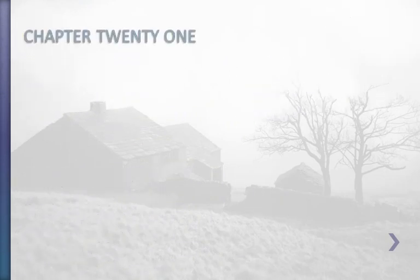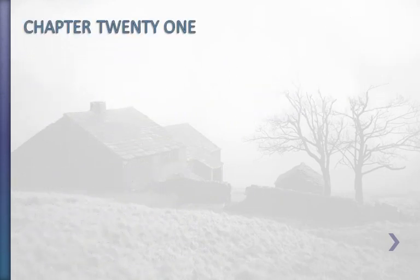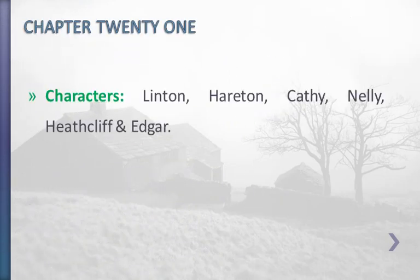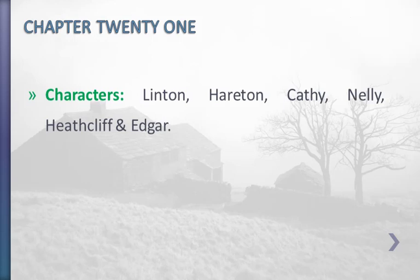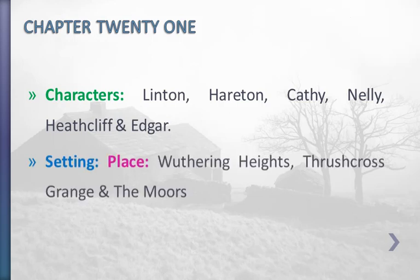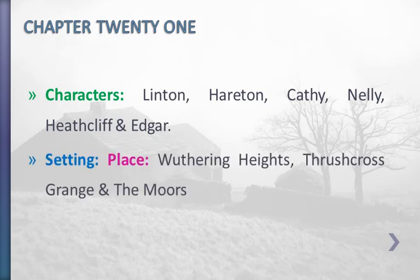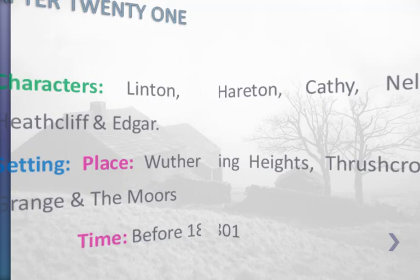The characters in Chapter 21 are Linton, Hareton, Kathy, Nellie, Heathcliff, and Edgar. The settings and places are Wuthering Heights, Thrushcross Grange, and the Moors, set at a time before 1801.